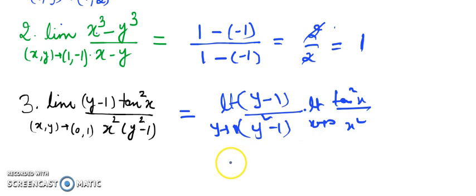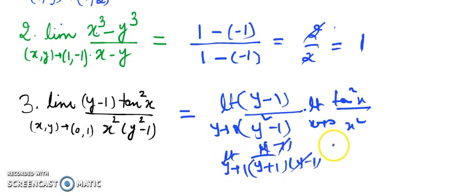Now after simplification, the limit is (y-1)/(y²-1). The (y-1) gets cancelled. You are getting 1/(y+1) here, because (y-1) and (y-1) will get cancelled. And you are putting y value equals 1.